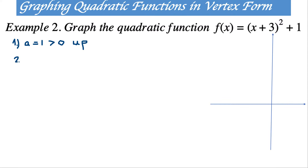Number 2: let's find the vertex. The vertex is going to be h and k. h is negative 3 and k is 1, so the vertex is at negative 3 and 1. We already found that without any calculation. So negative 3 is on the x-axis and 1 is on the y-axis — the vertex is right here.